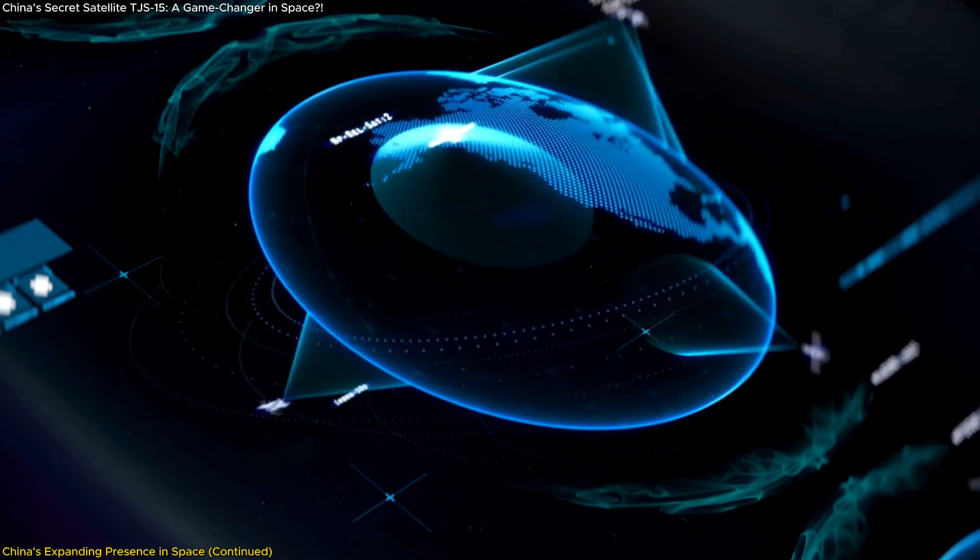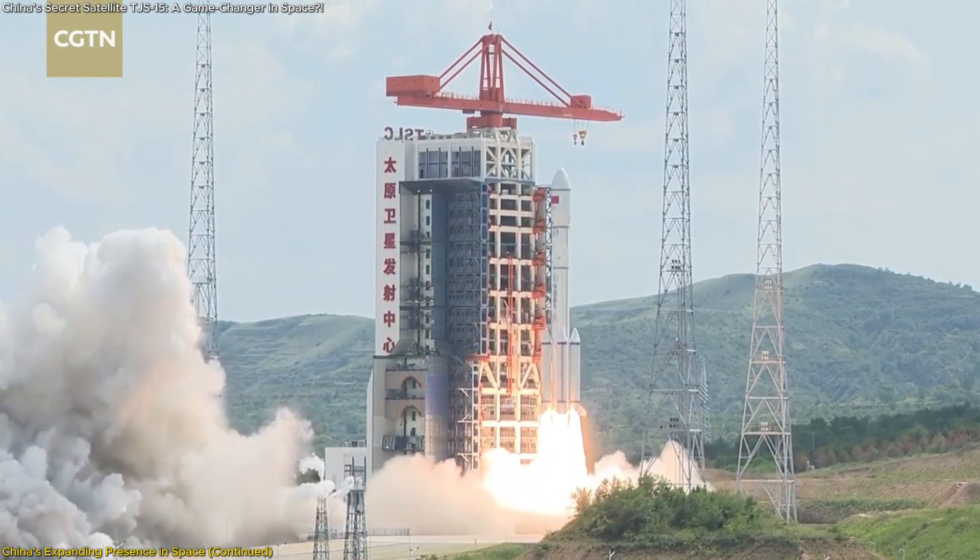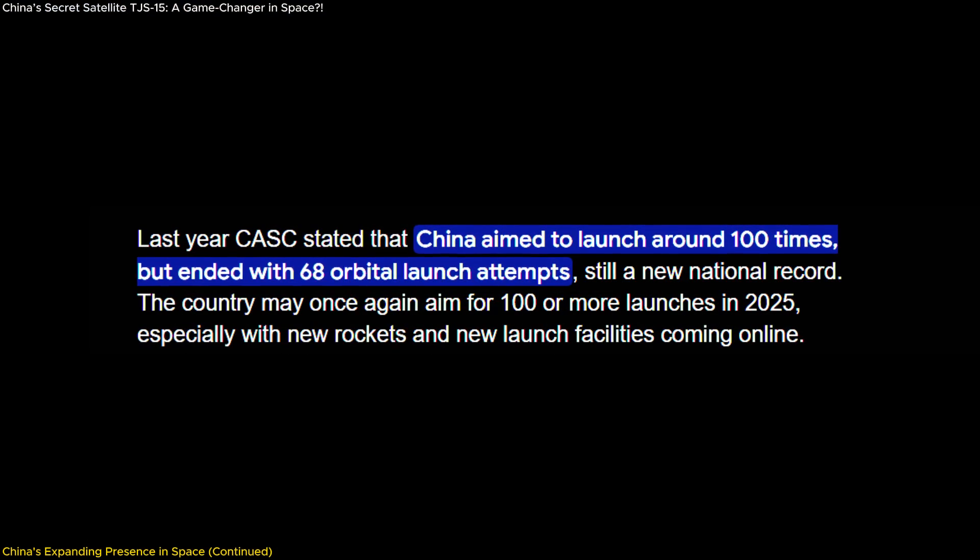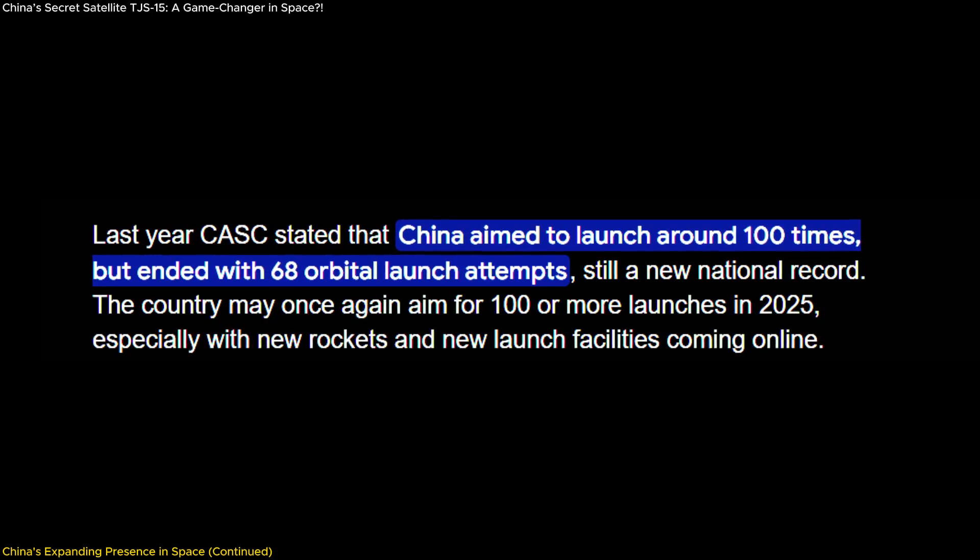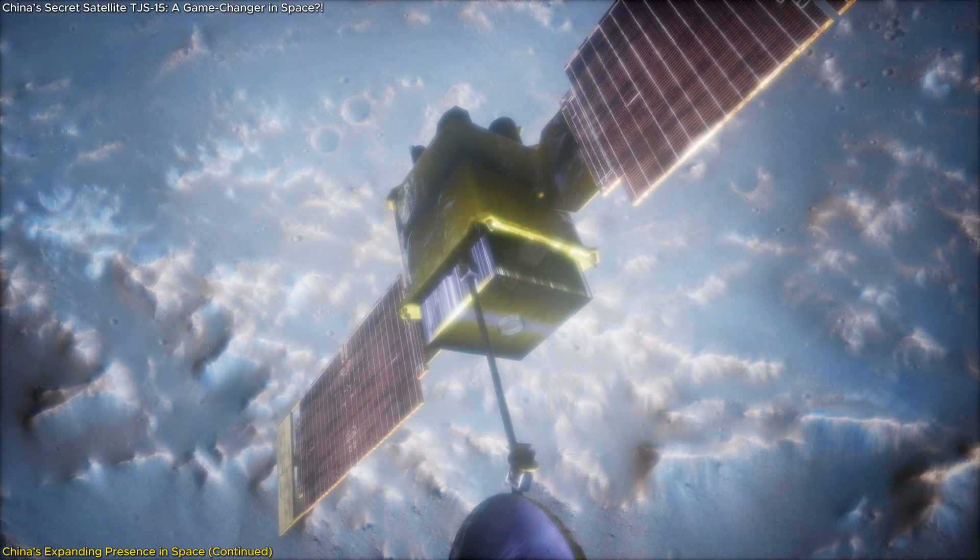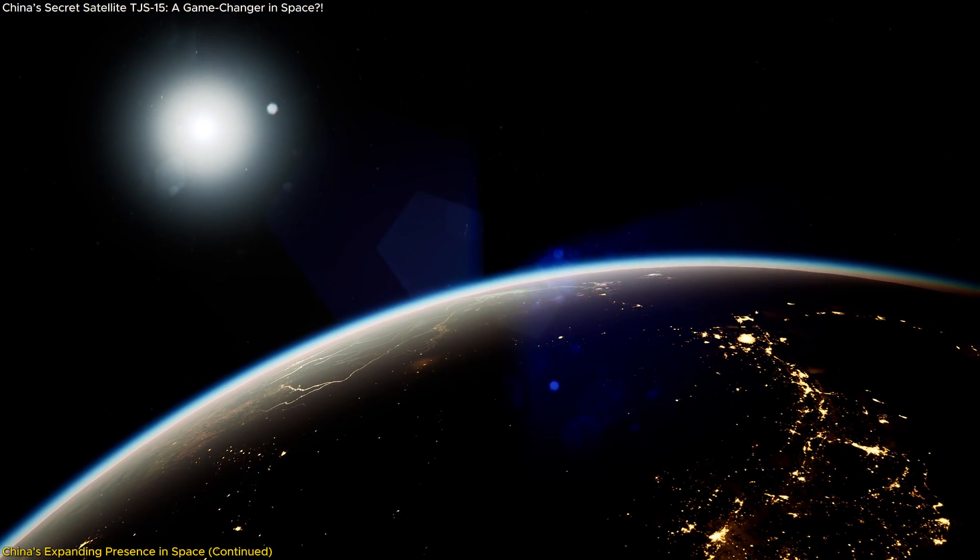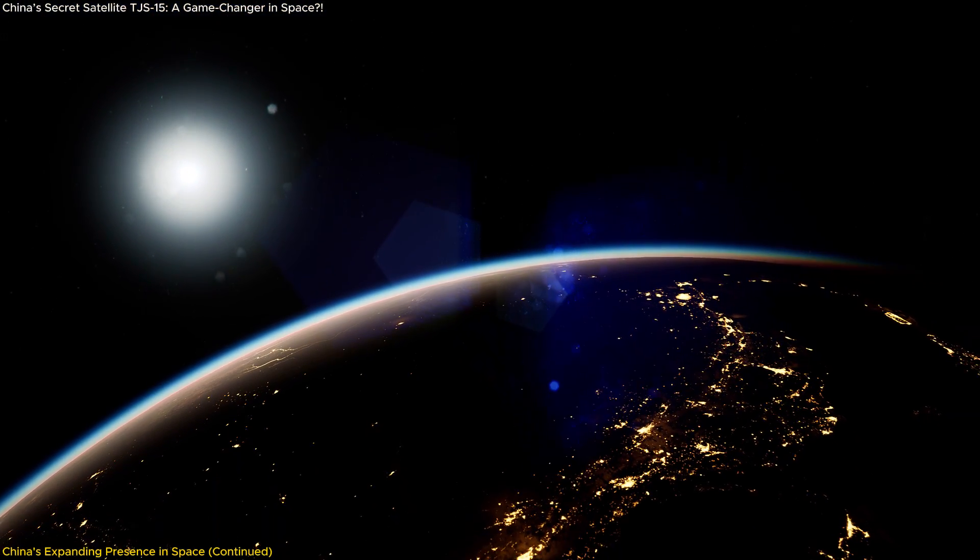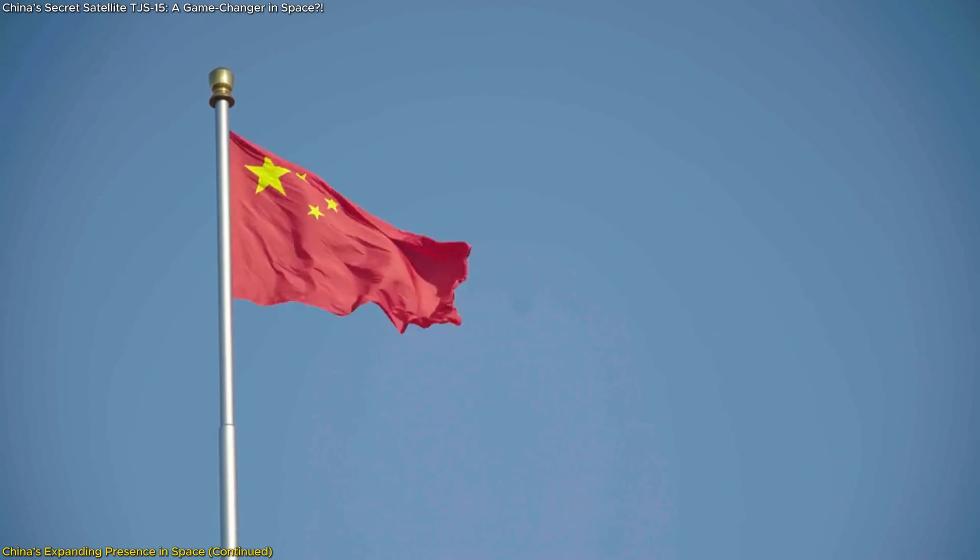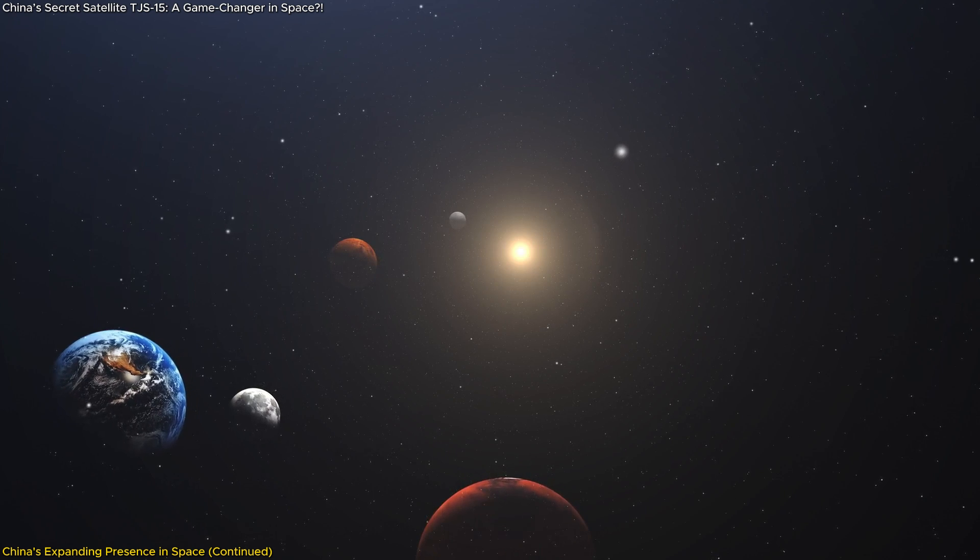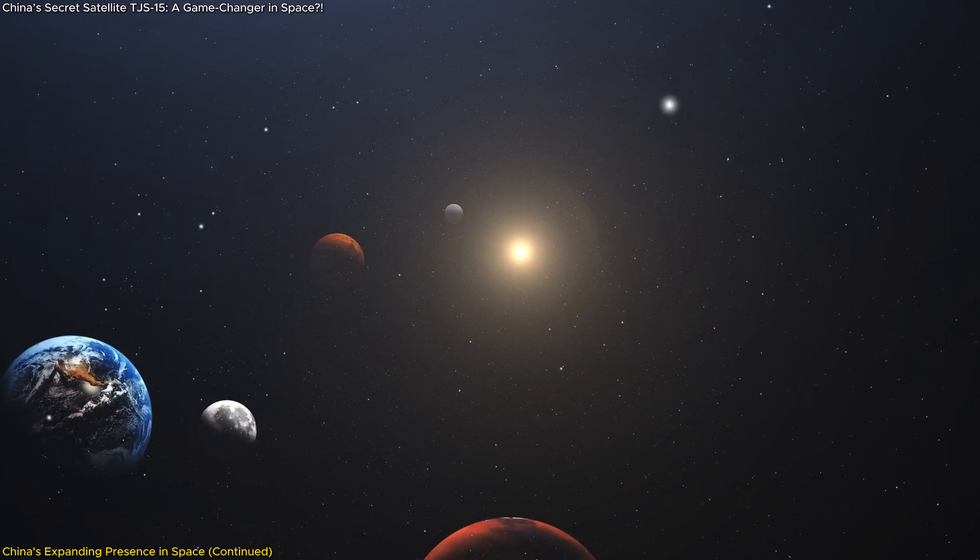One of the key aspects of China's space expansion is its ability to launch a high volume of missions within a short time frame. In 2024, China attempted 68 orbital launches, and in 2025, it is expected to surpass this number. The launch of TJS-15 marked the country's 10th successful orbital launch of the year, reinforcing its commitment to maintaining a strong presence in space. While China has yet to publicly release its full roadmap for 2025, past trends suggest that it will continue to push the boundaries of its space exploration and satellite deployment capabilities.